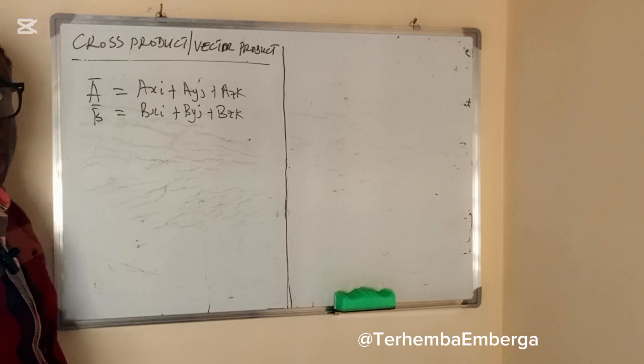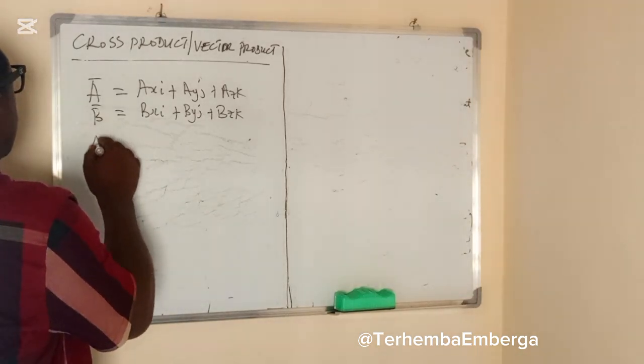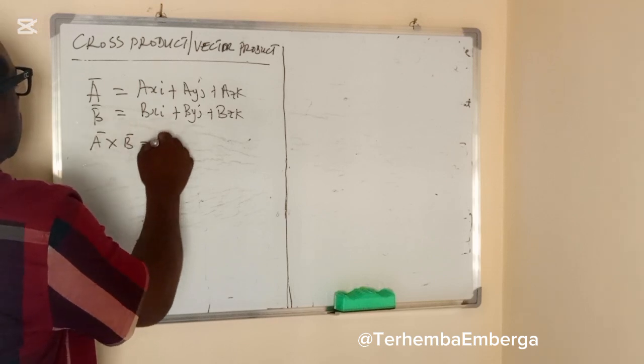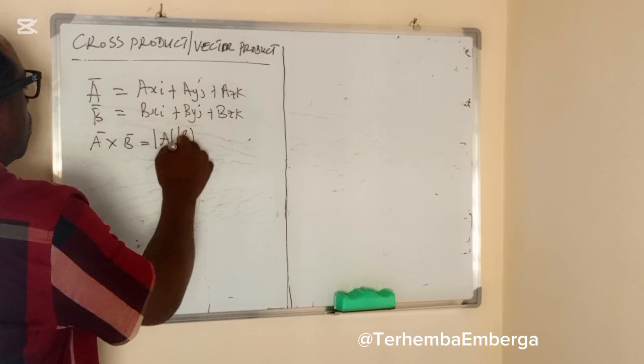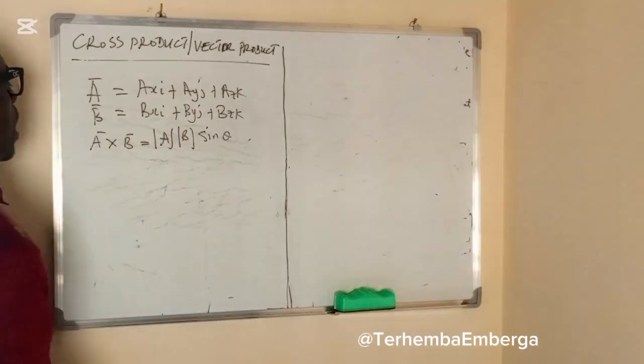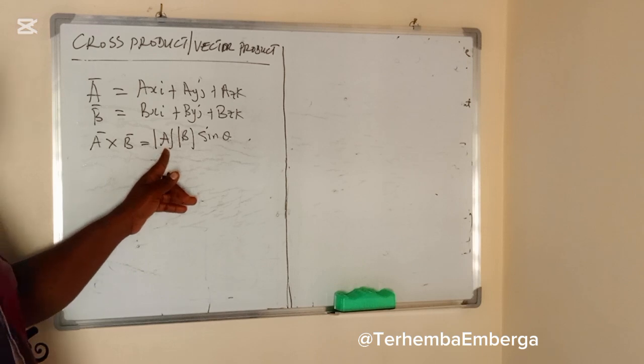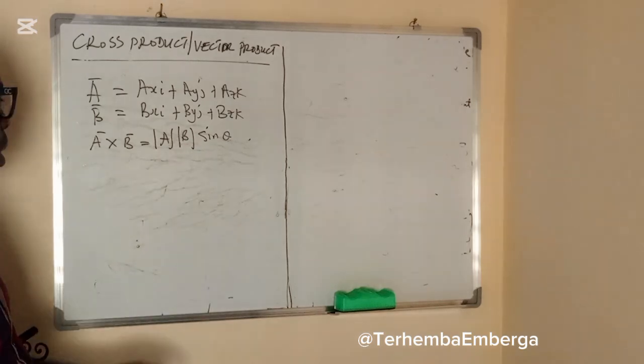With this, we can define the cross product of these two vectors as modulus of A, modulus of B, sine theta, whereas modulus of A is the magnitude of vector A, modulus of B is the magnitude of vector B, where theta is the angle between the two vectors.